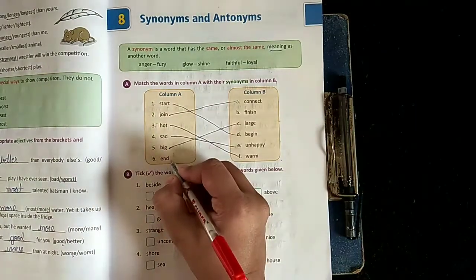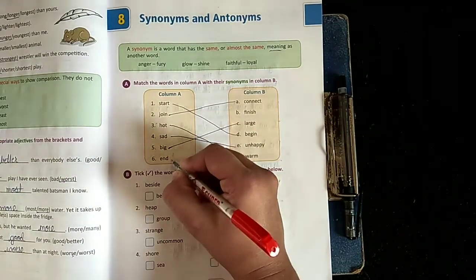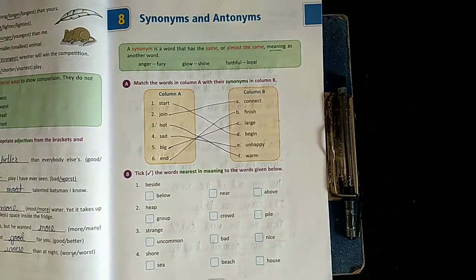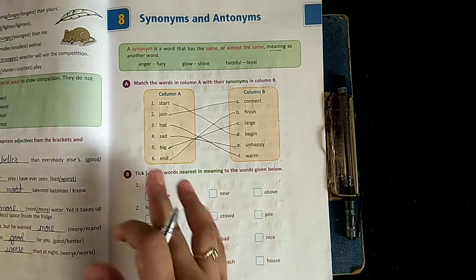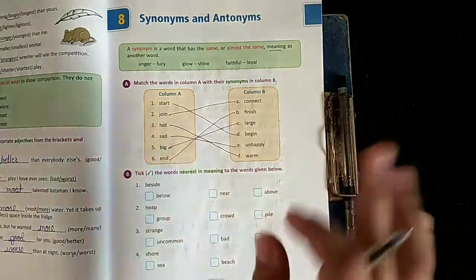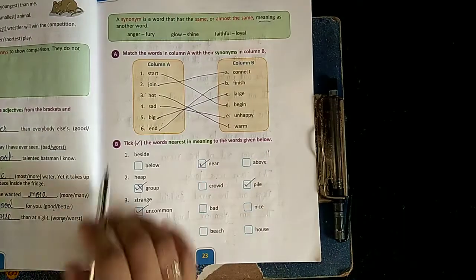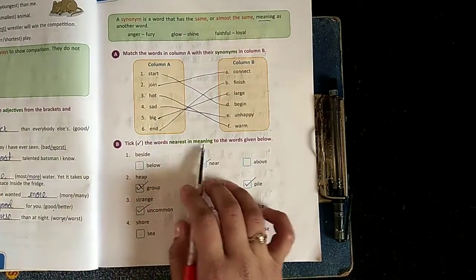End means khatam ho jana, and that is finish. Understood everyone? Synonyms matlab kya? Words jiski spelling alag hai, but their meaning is the same. Okay, see here in B - take the words nearest in meaning to the words given below. We have to find the words whose meaning is the same, right?